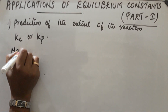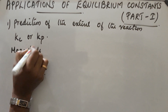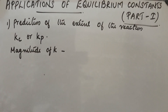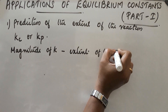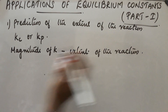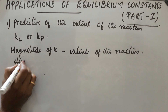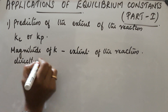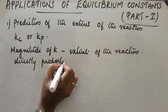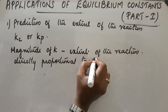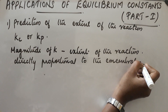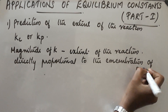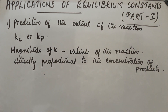The magnitude of K helps us to determine the extent of the reaction. From the stoichiometric equation, the magnitude of K is directly proportional to the concentration of the products and inversely proportional to the concentration of the reactants.